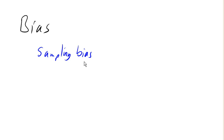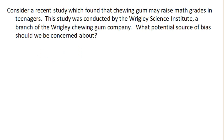Let's look at some other cases. Consider a recent study which found that chewing gum may help raise math grades in teenagers. This study was conducted by the Wrigley Science Institute, a branch of the Wrigley Chewing Gum Company. What potential source of bias should we be concerned about here? You're probably jumping on the fact that this is saying gum is good, from a study done by a gum company.